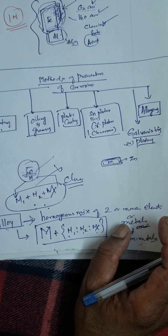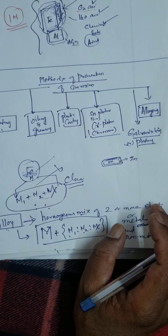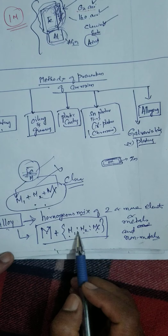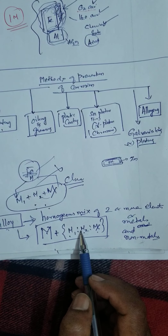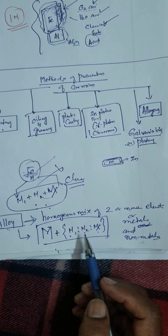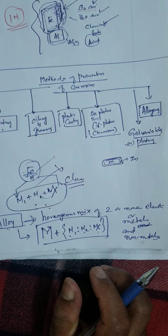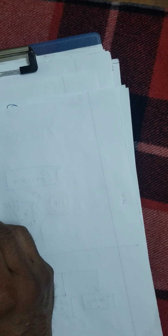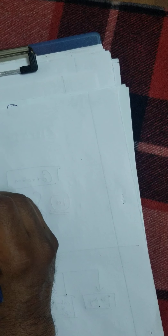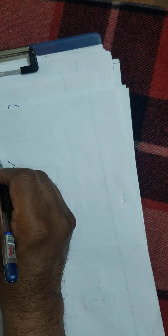The definition of an alloy: an alloy is a homogeneous mixture of two or more elements — metals and non-metals. Question: which process is used to obtain metal from metal oxide? That process is called reduction. Reduction is the process by which you can convert metal oxide to metal. Metal oxide, when reduced, gives pure metal.